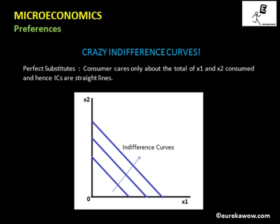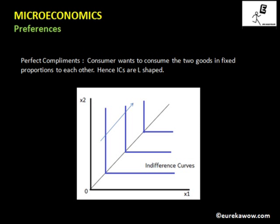Now we will look into the case of perfect complements. We say that two goods are perfect complements if the consumer wants to consume the two goods in fixed proportions to each other. This proportion might be one-to-one, it might be one-to-two — it can be anything.